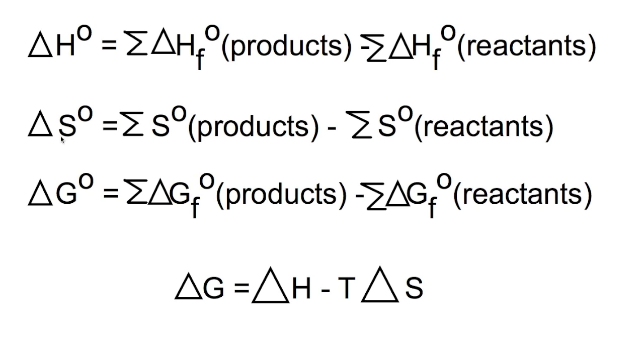The standard entropy change is the standard entropy of the products minus the standard entropy of the reactants. And the standard Gibbs free energy change is the standard Gibbs free energy of formation for the products minus the standard Gibbs free energy of the reactants.